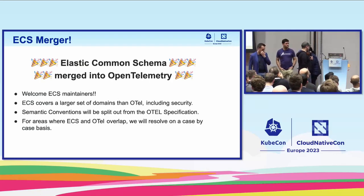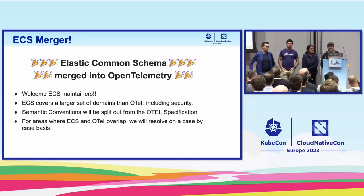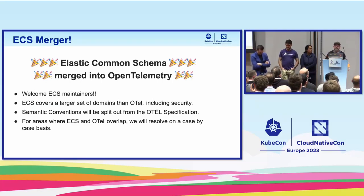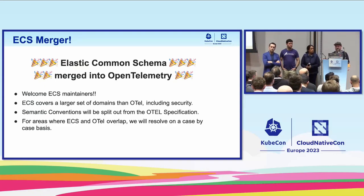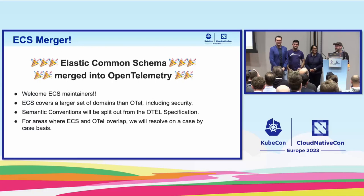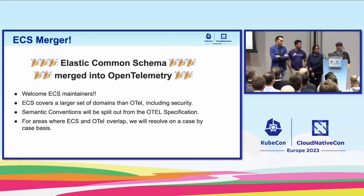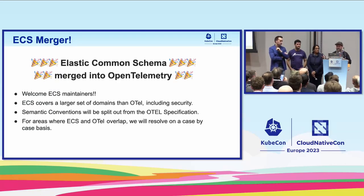We'll now cover semantic conventions. Semantic conventions are the schema of the actual data — while OTLP is the protocol, you also want a standardized way of describing an HTTP request, a database call, and everything your program's doing. Normalized data is hugely important, especially with many microservices and with machine learning and automated forms of analysis. There's been another project, Elastic Common Schema (ECS), that's been around for a long time focused mostly on logging. They came to us with the idea that we could merge these two projects together rather than having two separate standards.